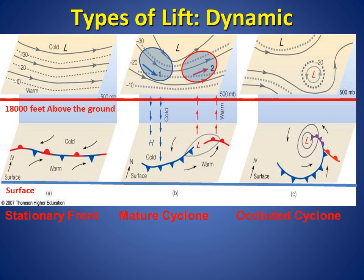At the surface, a wave or low pressure system, shown by the red L, has developed on the front and has now formed a cold front on the back side of the low, as indicated by the blue barbed line, and a warm front to the east of the low pressure area, as denoted by the red barbed line. Warm air moving ahead of the warm front to the east of the low will produce rising motion and lift for precipitation.